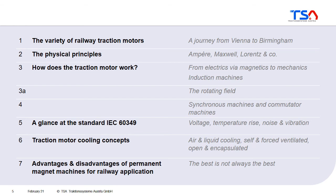In chapter 3a I will try to explain how the rotating field is produced in the electric machine. In chapter 4 we will have a look at different motor concepts like the synchronous machine — the permanent magnet machine or the electrically excited synchronous machine — and also at commutator machines.